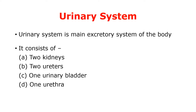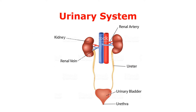The urinary system consists of 2 kidneys, 2 ureters, 1 urinary bladder and 1 urethra. We can see all the organs of the urinary system in this diagram — there are 2 kidneys, 2 ureters, 1 urinary bladder and 1 urethra present in the urinary system.